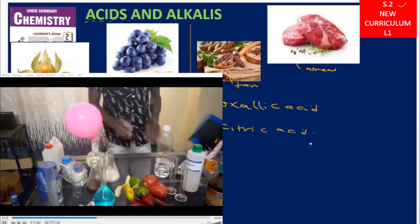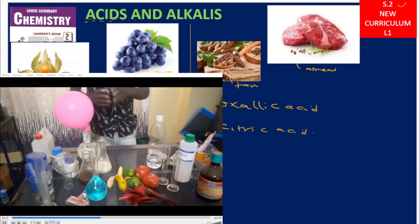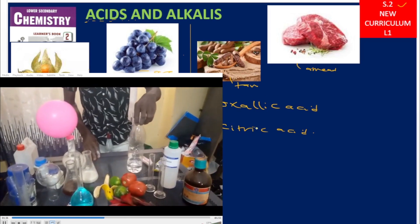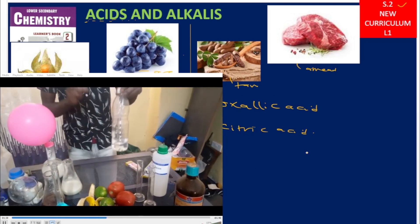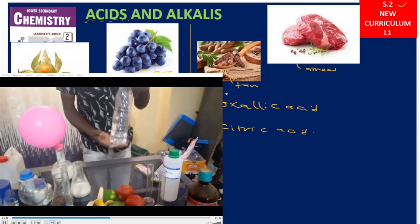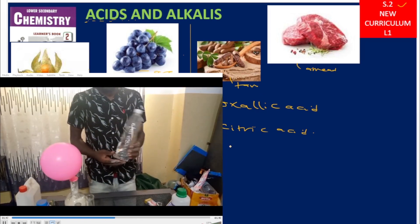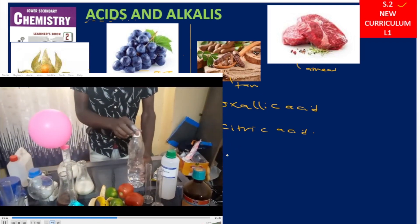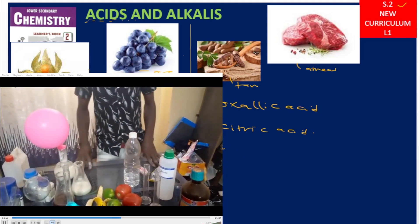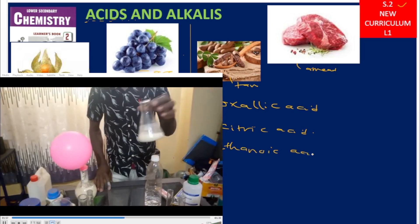Citric fruits contain citric acid — lemons, oranges, gooseberries, pineapples, and many other examples. Over there is the vinegar, which is normally used at home to clean utensils, glasses, and tiles. That vinegar contains acids, and the acid in vinegar is called ethanoic acid.